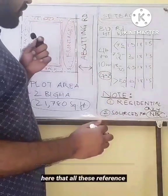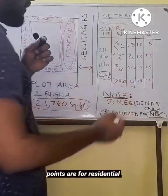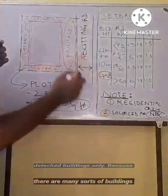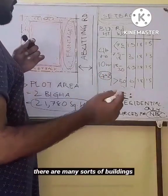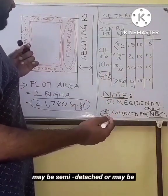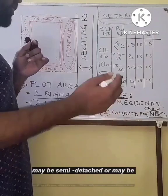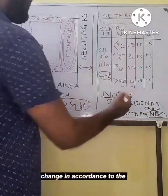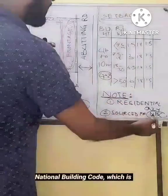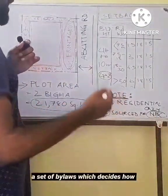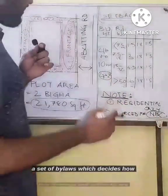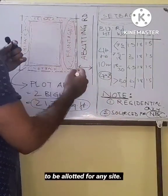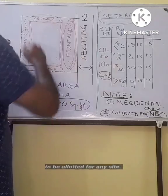We have to note that all these reference points are for residential detached buildings only, because there are many sorts of buildings which can be industrial in nature, maybe semi-detached or maybe of other forms. So these setbacks change in accordance to the National Building Code, which is a set of bylaws that decides how this frontage and setbacks are to be allotted for any site.